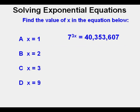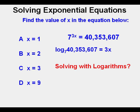Here's another problem, slightly more complex. Find the value of x in the equation below: 7 to the power of 3x equals 40,353,607. To me, the hardest part of this problem is choosing one way to solve it since there are so many possibilities.